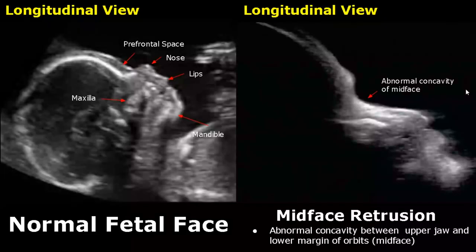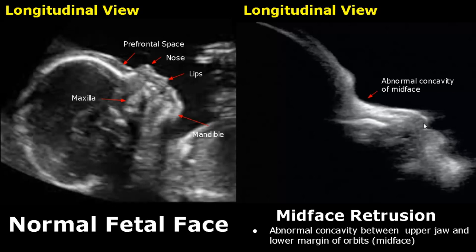The midface is the area between the upper jaw and the lower margin of the orbits. In midface retrusion, an abnormal concavity is seen between the upper jaw and the lower margin of the orbits. It is associated with a variety of abnormalities such as Trisomy 21, Turner syndrome, and many other syndromes.